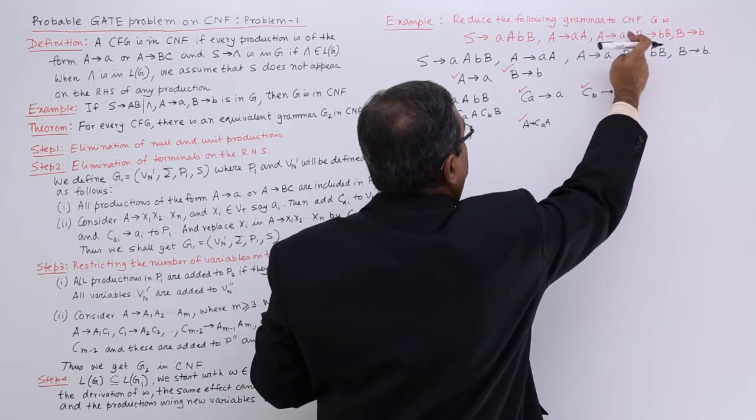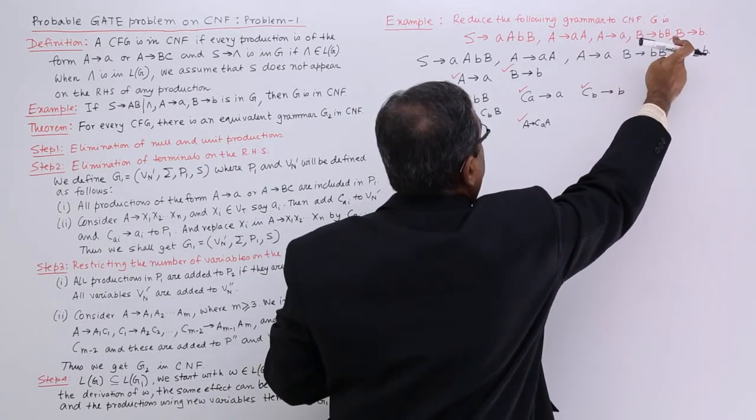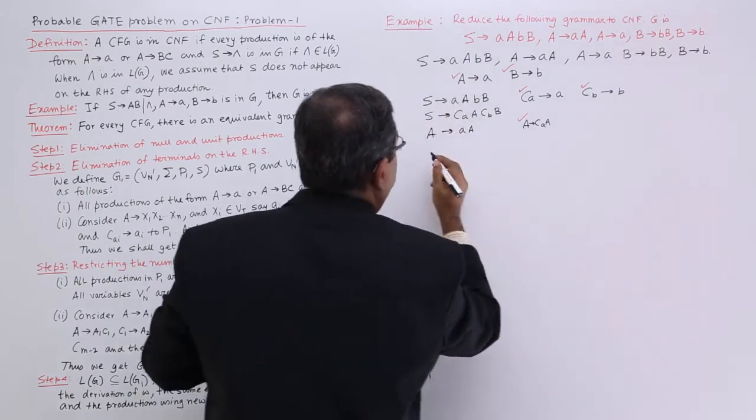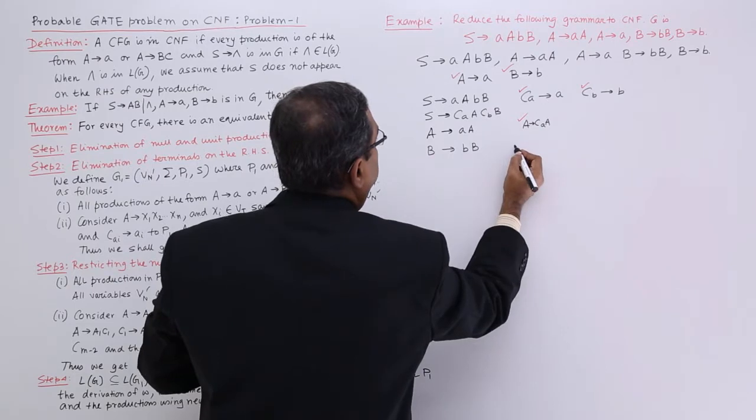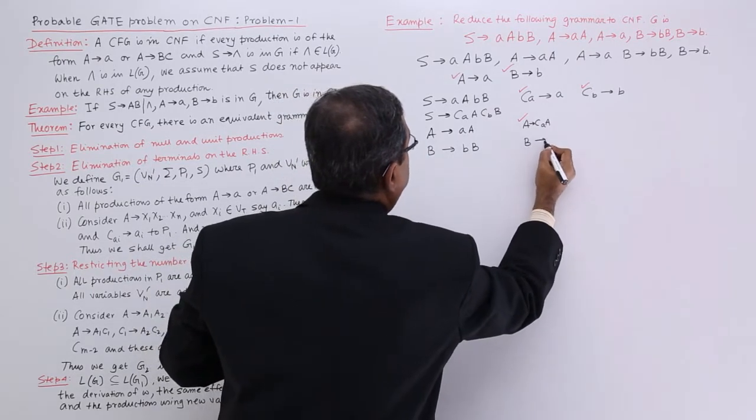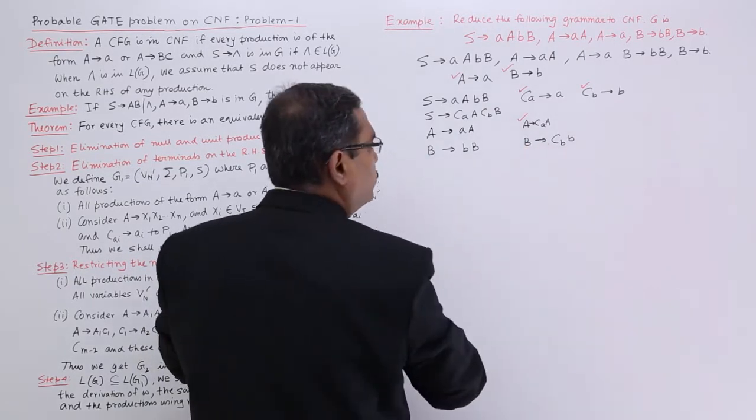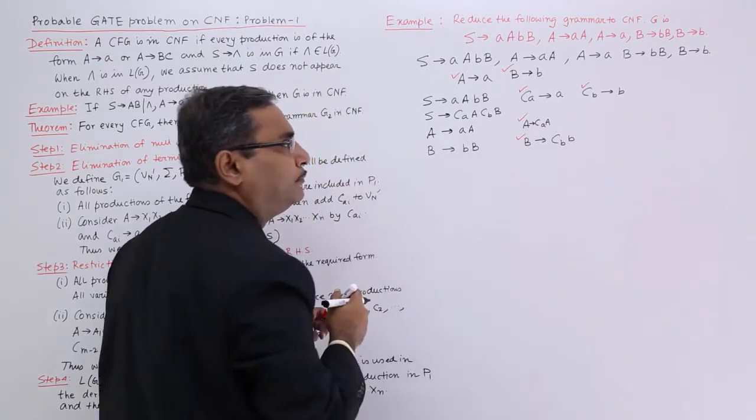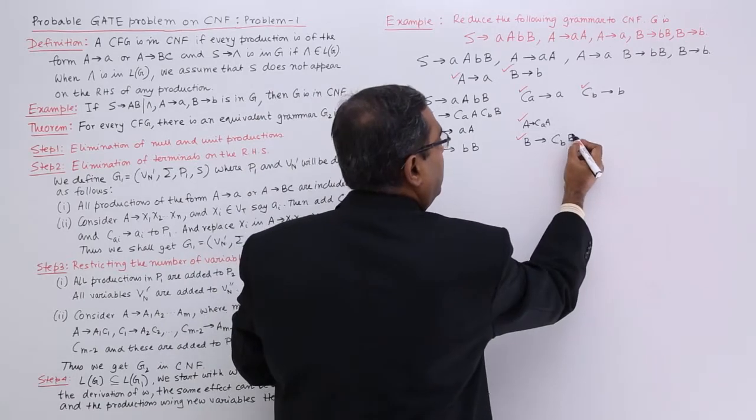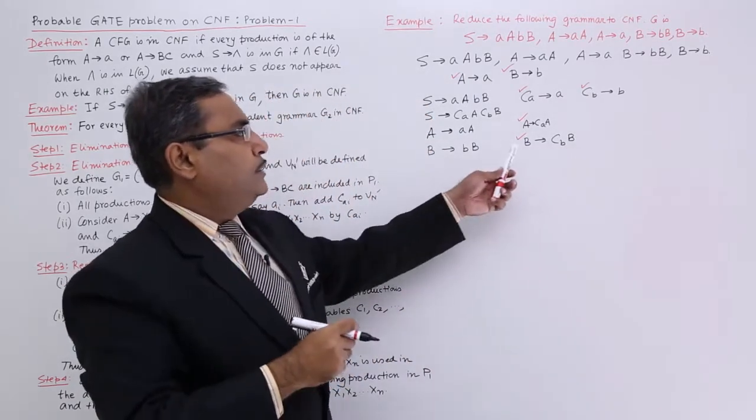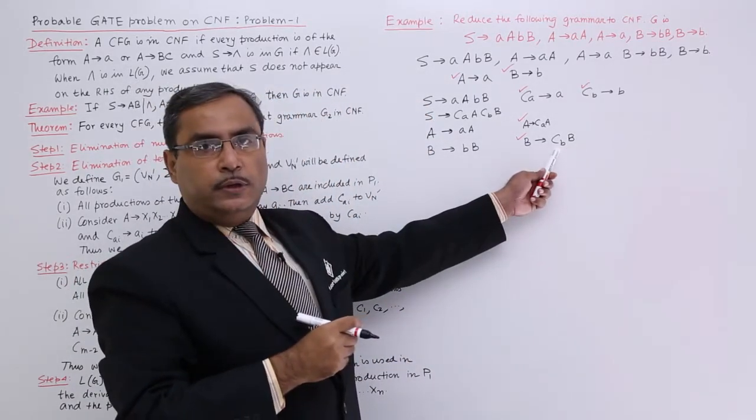Next one, B produces BB can be written as B produces CBB, and it is also in Chomsky's normal form. Why? Because non-terminal produces non-terminal non-terminal. So it is also in Chomsky's normal form.